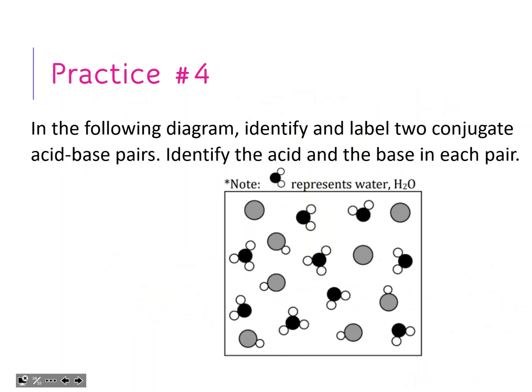Now some particle model diagrams. The diagram tells us smaller circles represent hydrogen and the bigger black-colored circle is oxygen - so that combination represents water. Pay attention to the H: where is it going and where is it coming from, so you can identify the acid, base, and conjugate pairs.